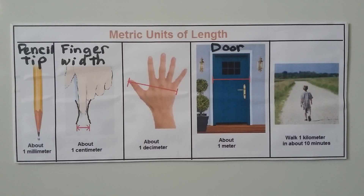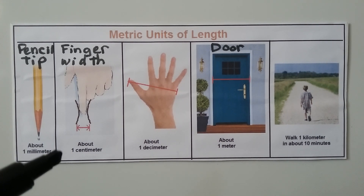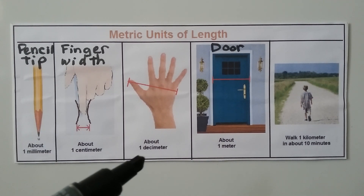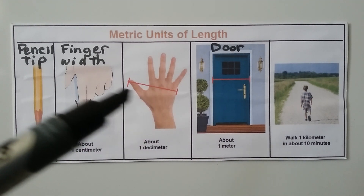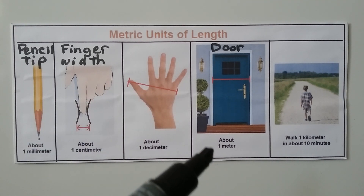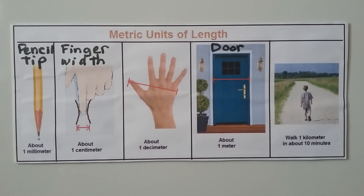For those of you in the US or those not used to metric units: 1 millimeter is about the size of a pencil tip. 1 centimeter is about the width of a finger. 1 decimeter is about the width of a hand with the thumb out. 1 meter is about the width of a door. And 1 kilometer is about how far you can walk in 10 minutes.